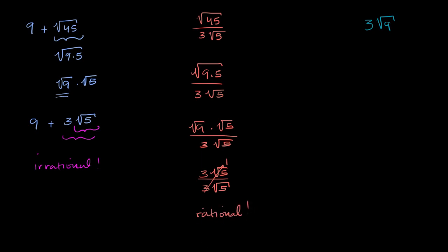Now let's do this last expression: 3 times the principal root of 9. The principal root of 9 is 3, so this is 3 times 3, which equals 9. And we've already established that 9 can clearly be expressed as the ratio of two integers — 9 over 1, 27 over 3, 45 over 5 — all different ways of expressing 9. So this is rational.